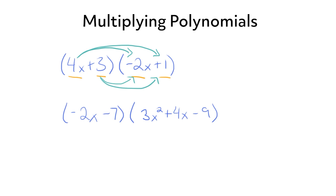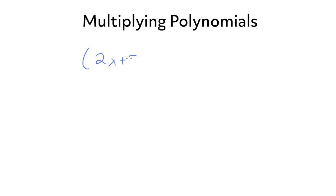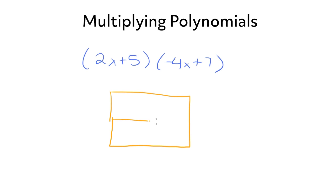The first way that I'm going to show you is to use a box method. So let's use the box method to multiply 2x plus 5 times negative 4x plus 7. So the first thing to notice is that we're multiplying two binomials, so we're going to want to set up a 2 by 2 box — 4 squares total. Now we're going to write one polynomial on the left and one on the top.